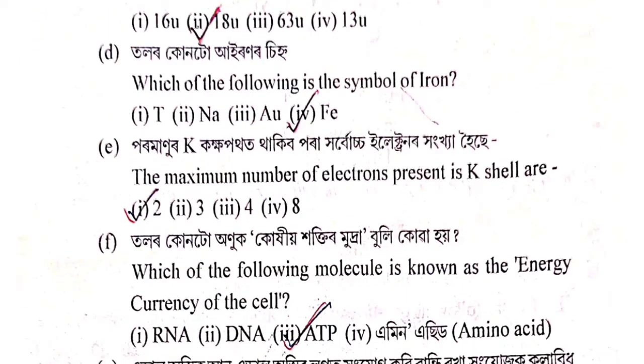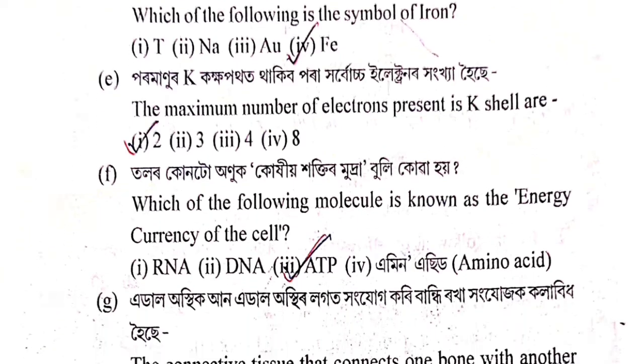Next question: Talor kuntu iron-or sinna hoi se? Which of the following is a symbol of iron? Options: T, N, A, U, Fe. The correct answer is Fe — eto se Ferrum, eto hoi se iron-or sinna.